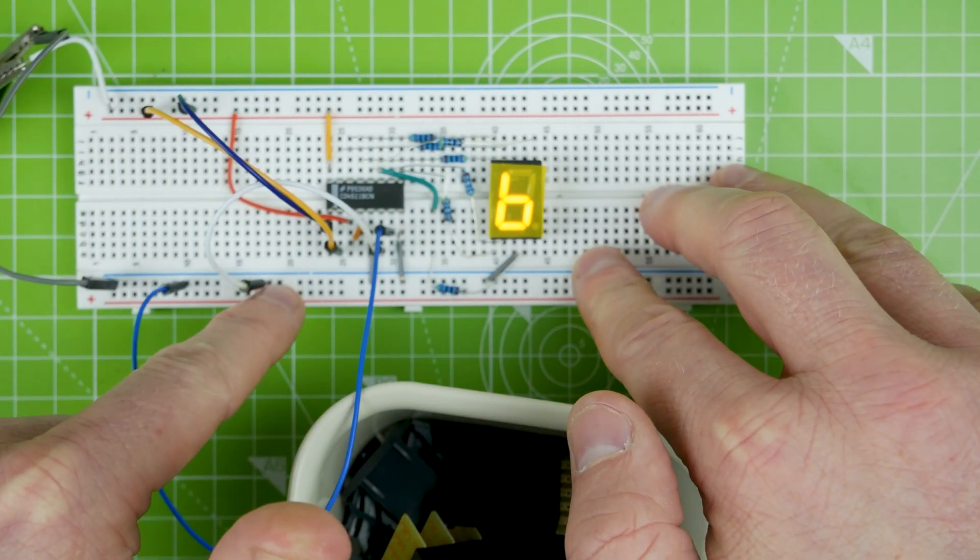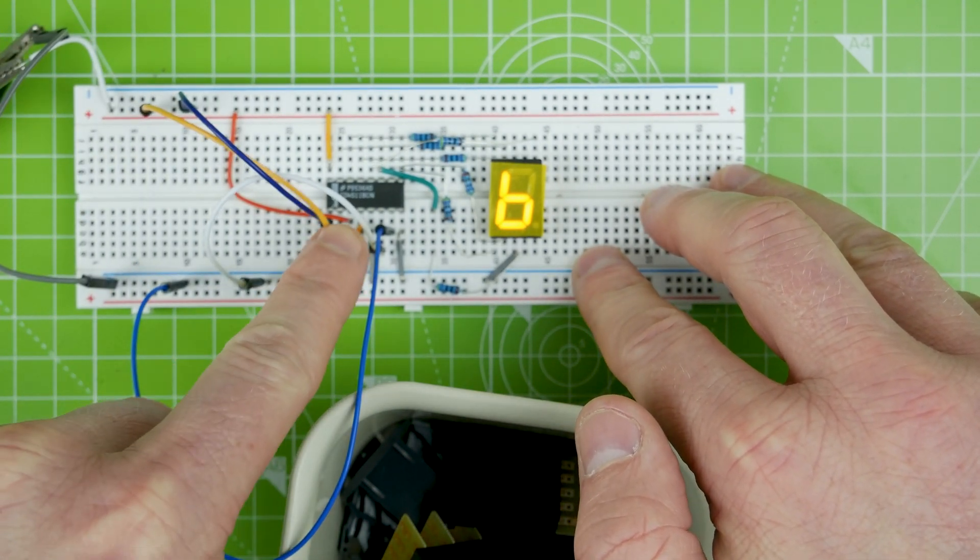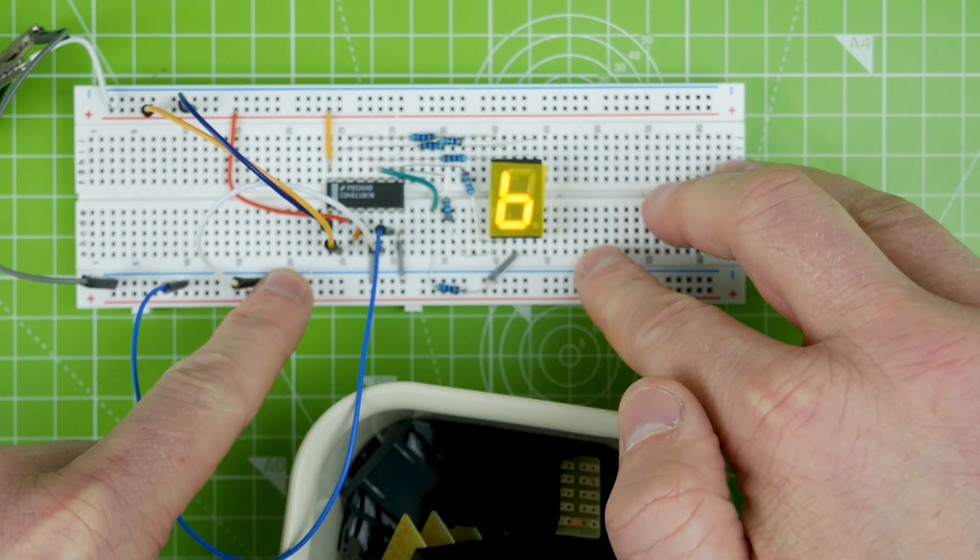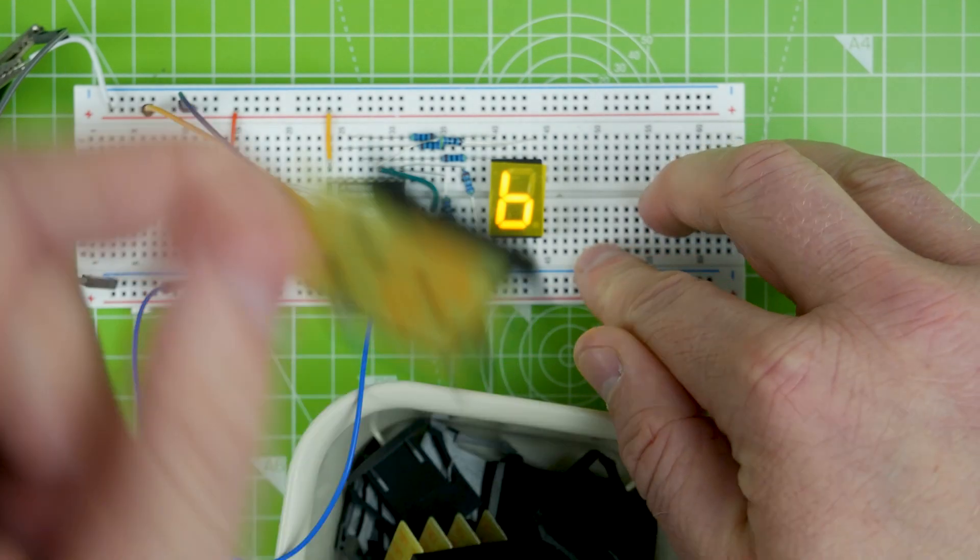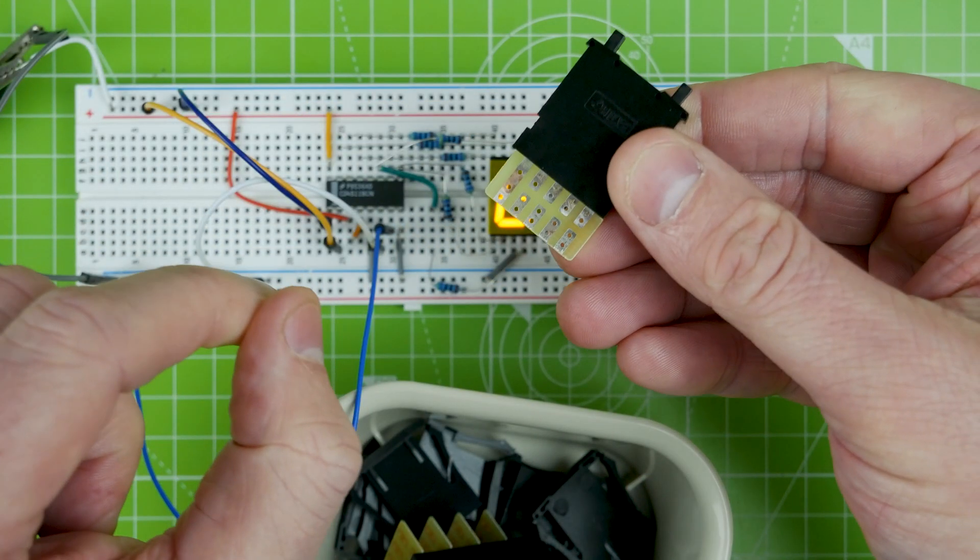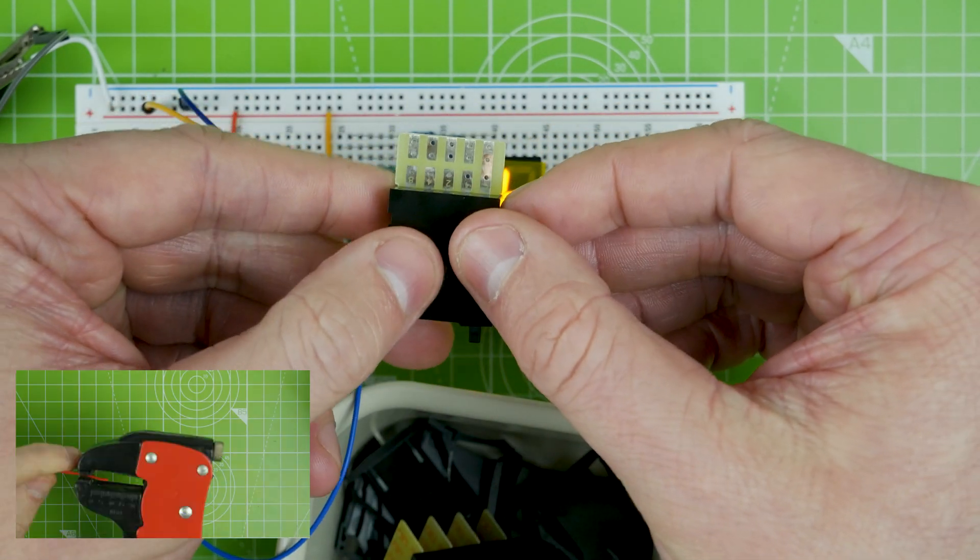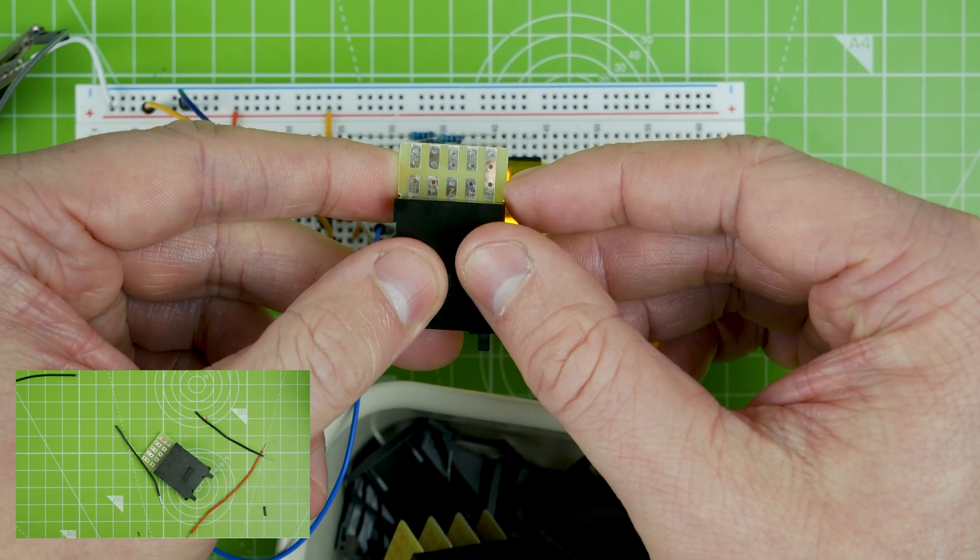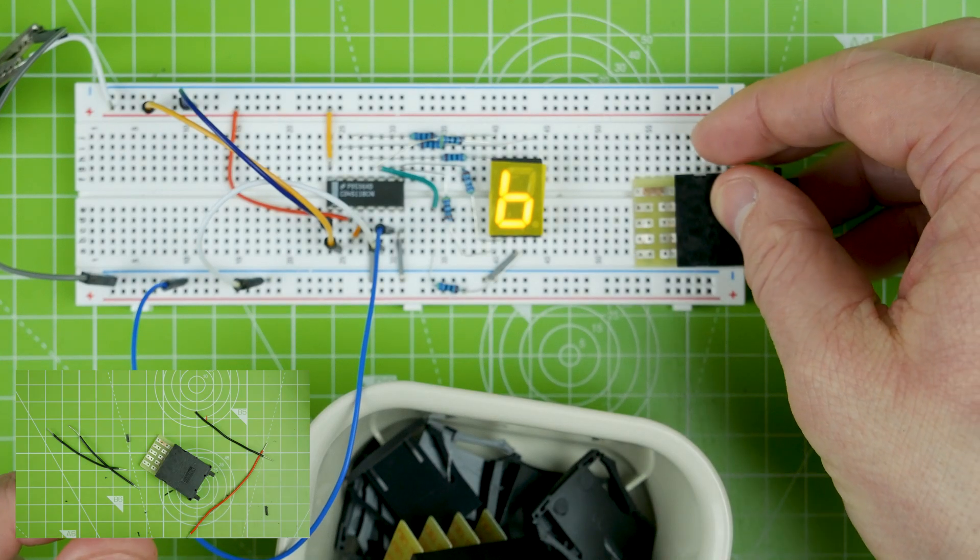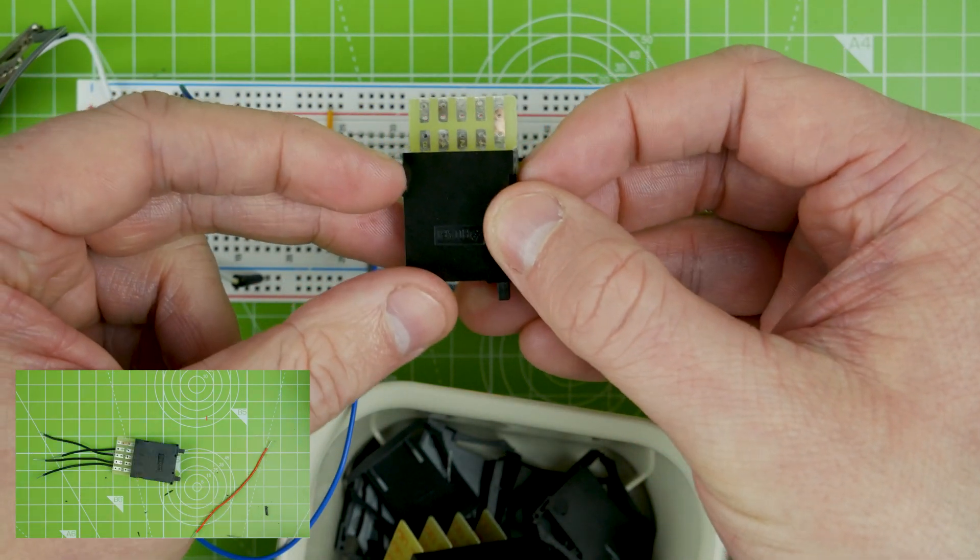So we need to put some pull-down resistors onto the inputs of the 4511, and we're going to need to wire one of these up with some wires to go to the inputs. Now unfortunately the pin spacing on here is not breadboard appropriate, which is kind of annoying, so we'll just have to have some wires floating around.